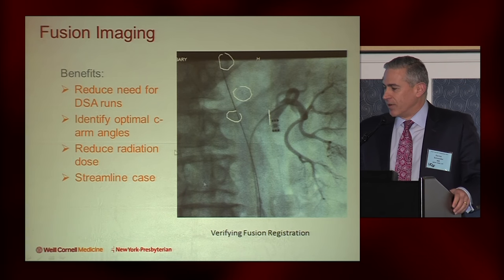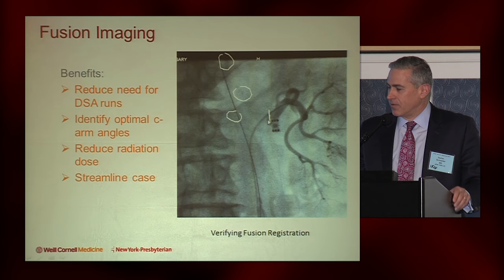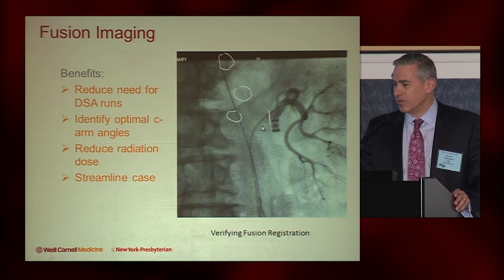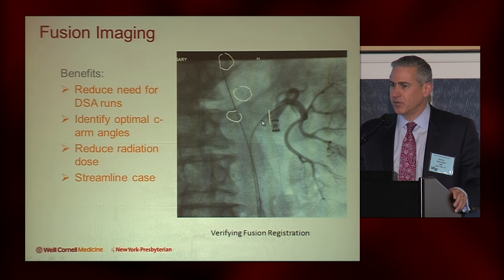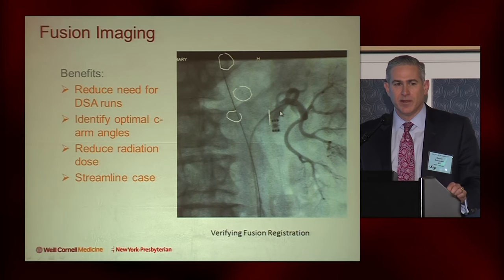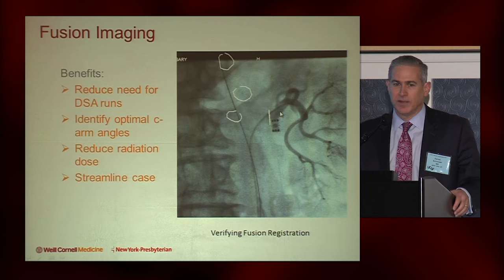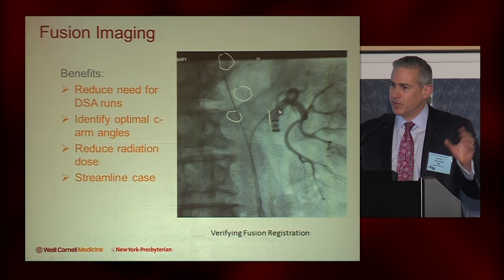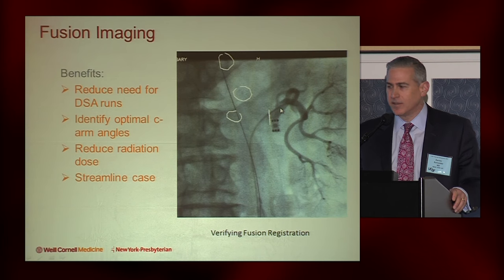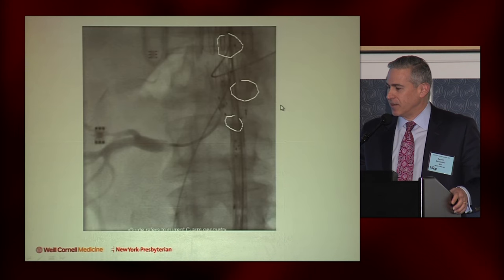Here is one of our cases — a complex thoracoabdominal case. Once we've created this overlay, you can see these little rings: those are the markers for the celiac, SMA, and the two renal arteries. We usually do a quick catheterization of one or two of these vessels to confirm that our registration and alignment is appropriate. Here you can see good alignment with the target left renal artery. We don't do digital subtraction angiography to start these cases — we basically just catheterize, do a puff of contrast, and save the radiation by not doing the DSA runs.